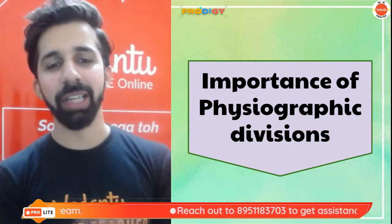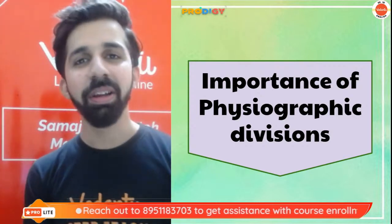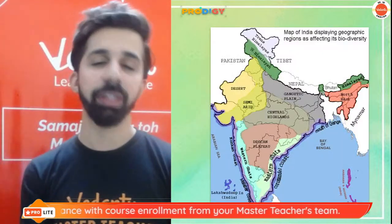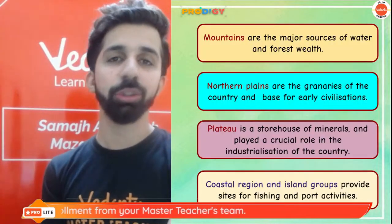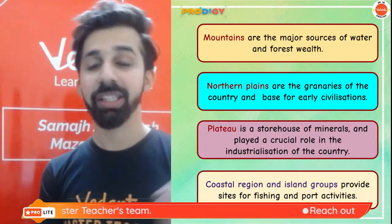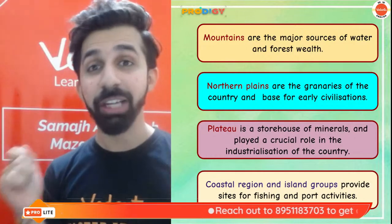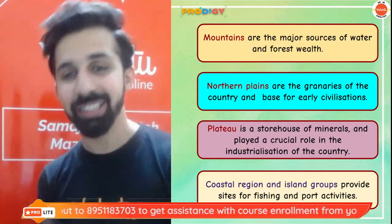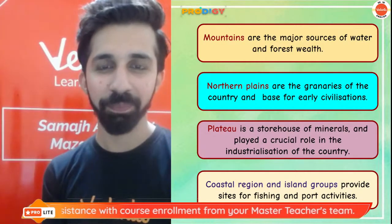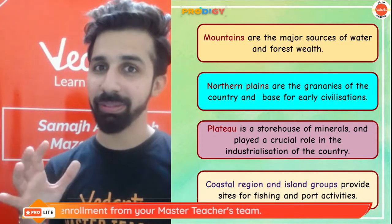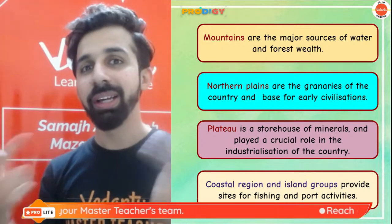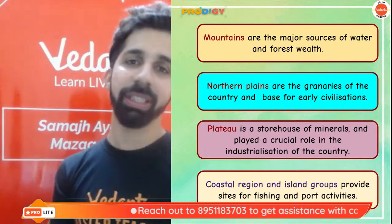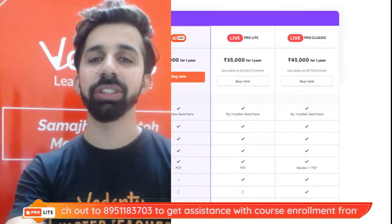Having covered all six physical divisions — Himalayas, North Indian Plain, Indian Desert, Peninsular Plateau, Coastal Plains, and Islands — let's talk about their importance. Mountains are the major source of water and forest wealth. Northern plains are the granaries of the country, with agriculture as the main occupation providing food for the entire country. Plateaus are the storehouse of minerals and contribute to industrialization. Coastal plains and island groups provide sites for fishing and port activities.